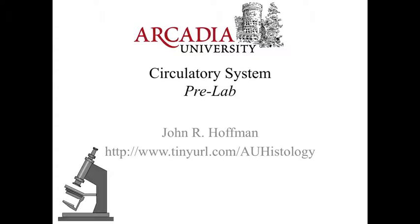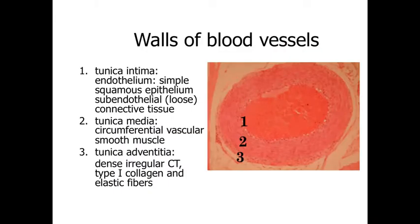Hello, and welcome to our pre-lab activity associated with the circulatory system. This is the first of our lectures where we're going to be looking at organ systems. We've talked about the various tissue types present within the body, and now as we start to look at organs and organ systems, we're going to be putting together these different tissues to form structural units — assemblages built with a variety of tissues to give the structure and functions necessary for that organ.